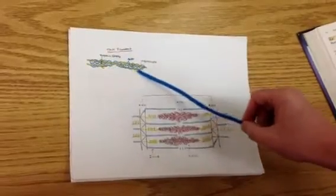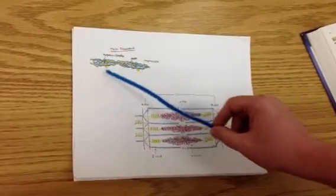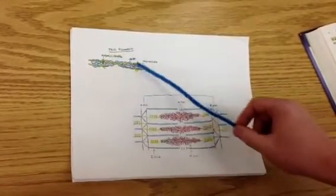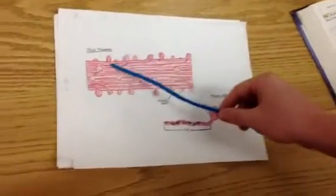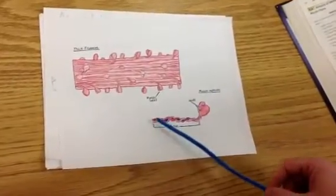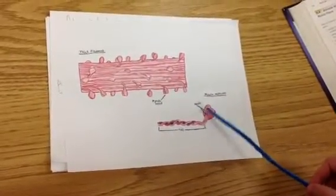We also have a portion of thin filament here, which has a troponin complex, actin, and tropomyosin. And we have a thick filament, which has a tail and two globular heads.